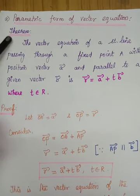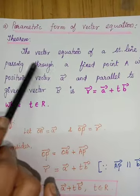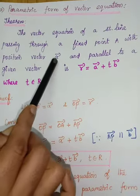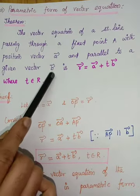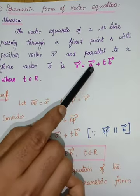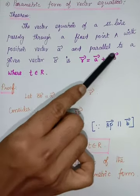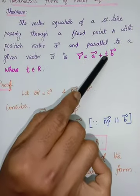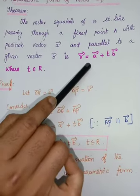The theorem states: the vector equation of the straight line passing through a fixed point A with position vector A vector and parallel to a given vector B vector is R vector = A vector + T × B vector, where T is a real number. Here T is a parameter, so this is called the parametric form of the vector equation.